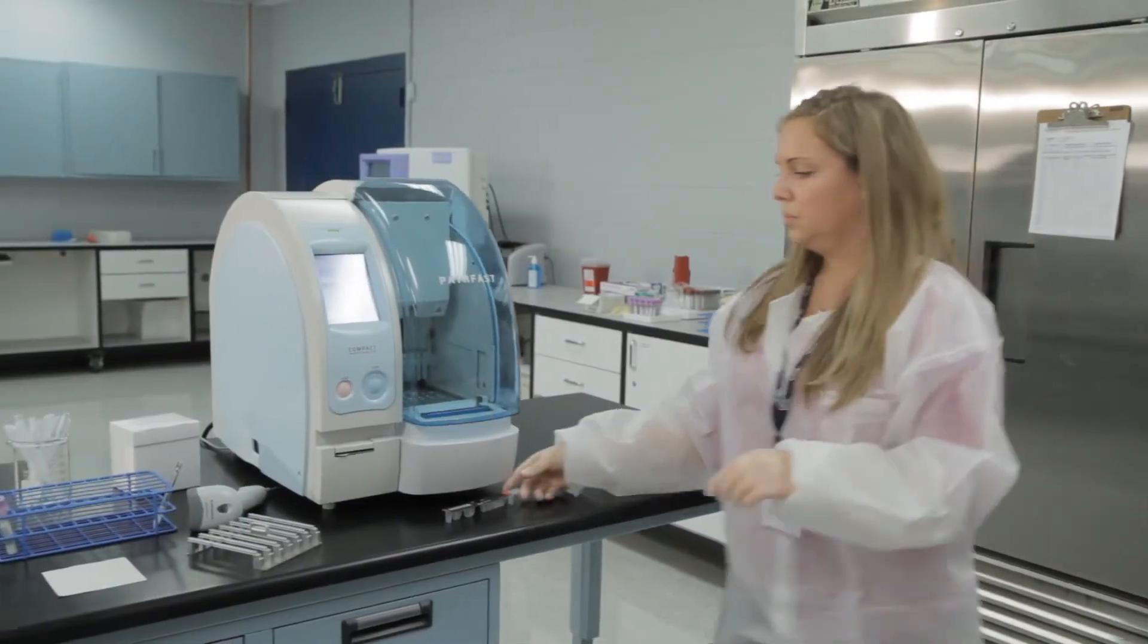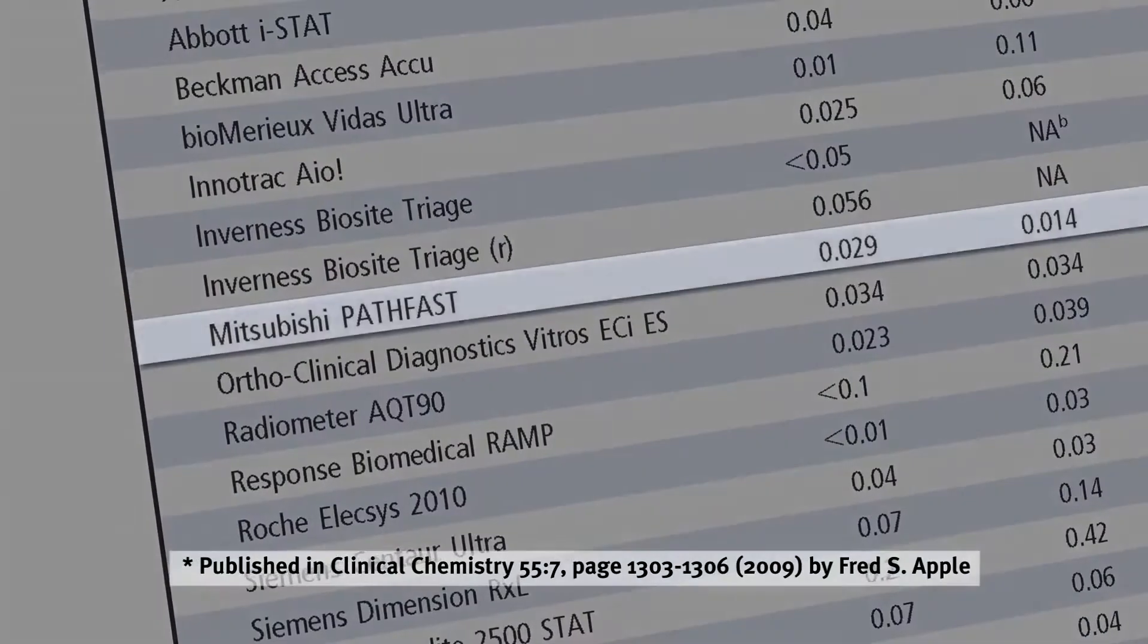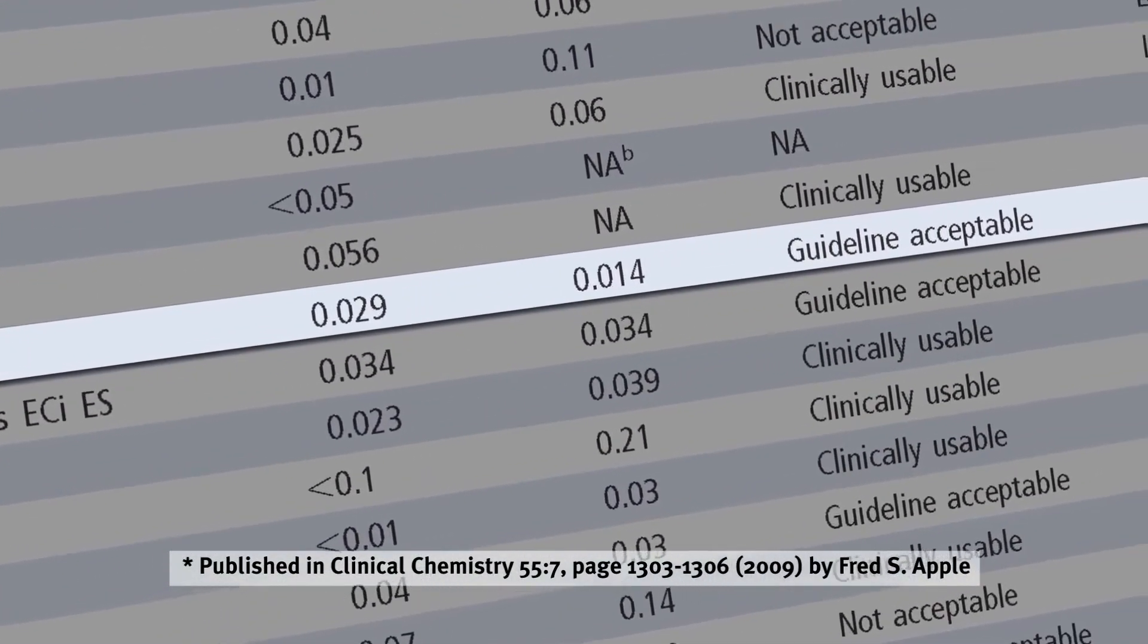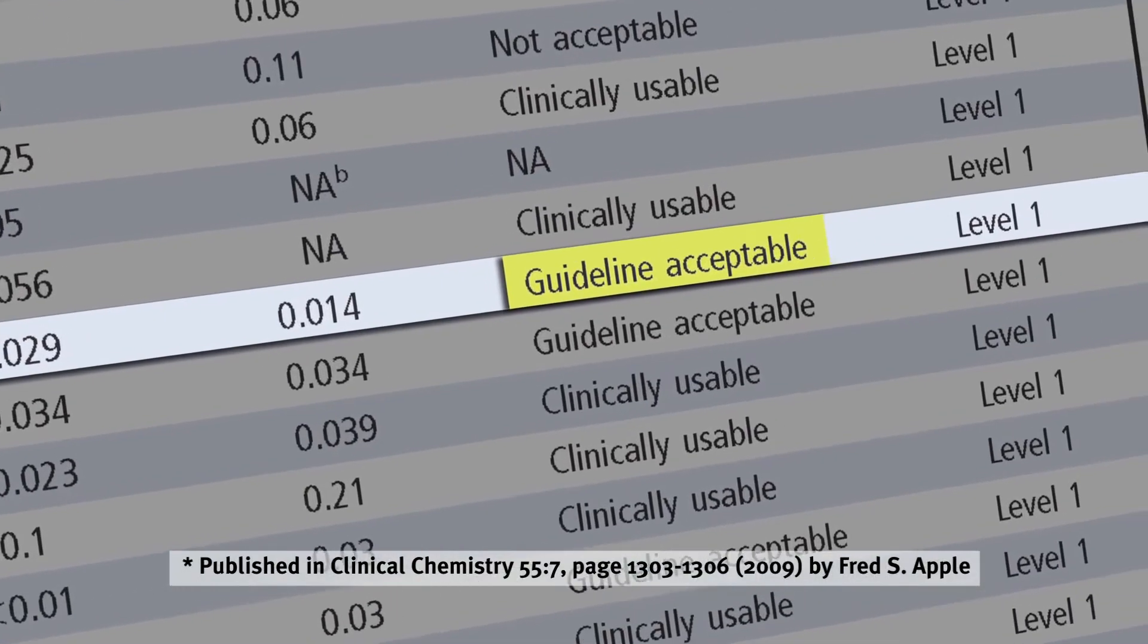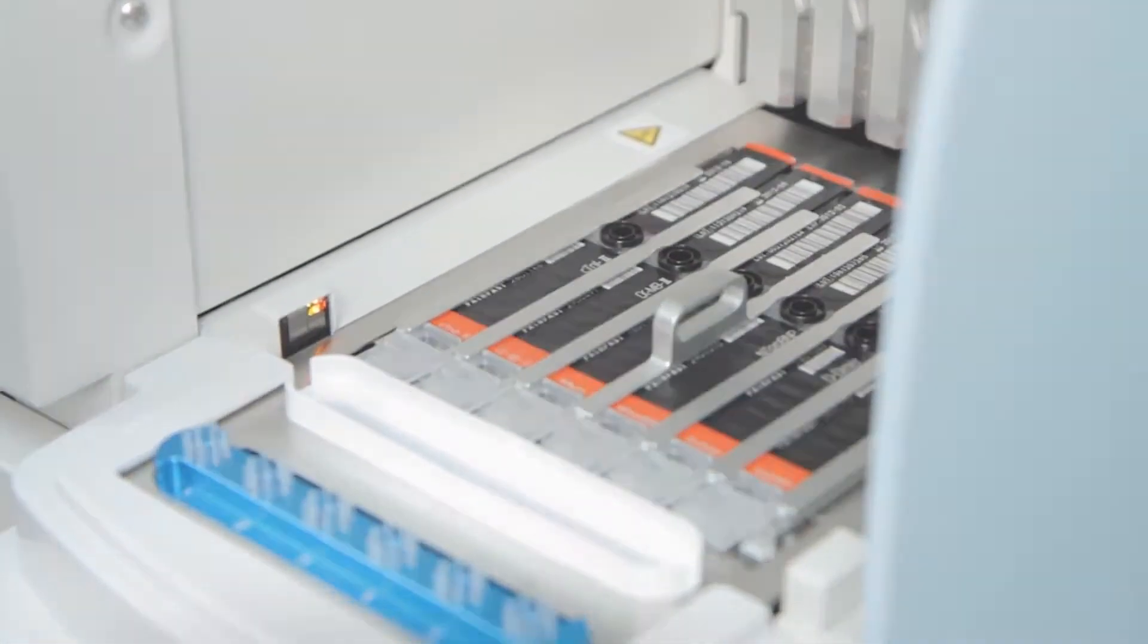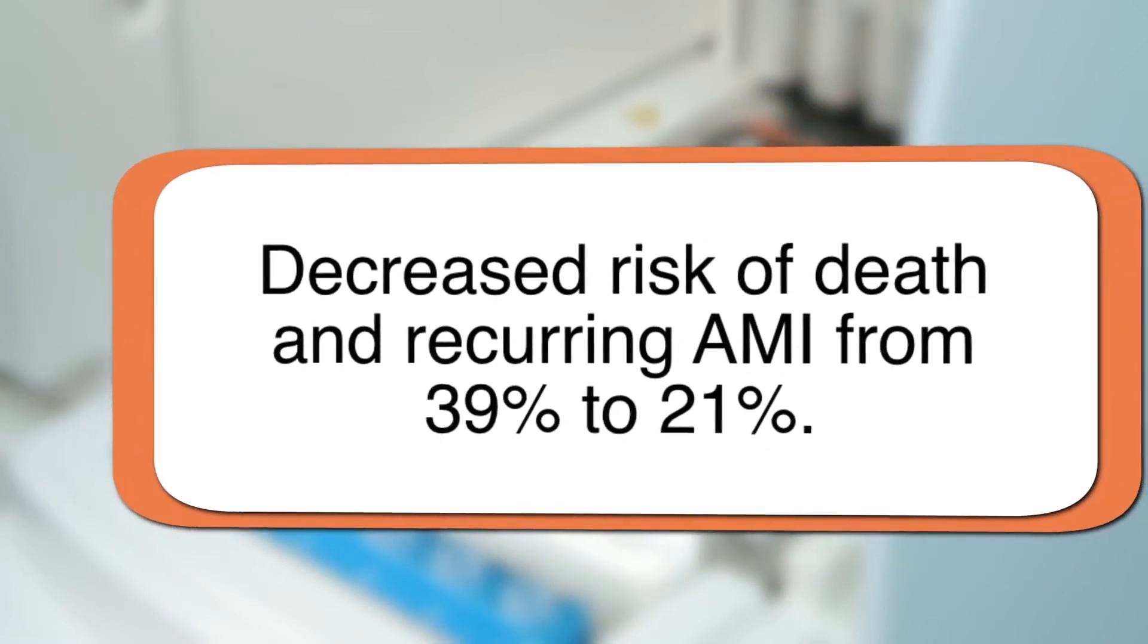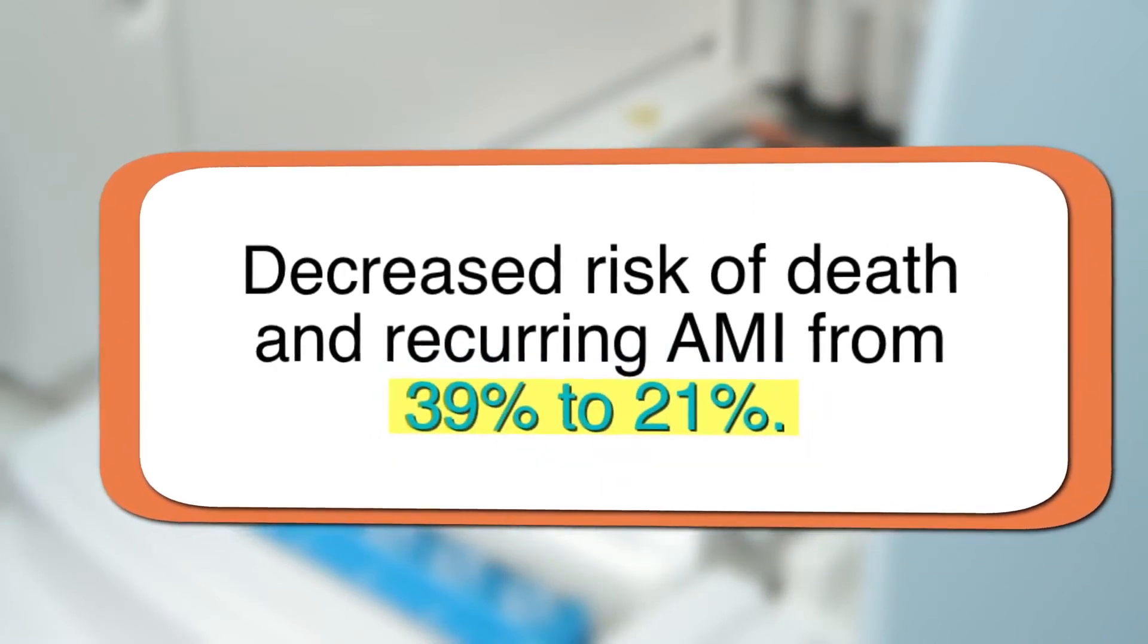The PathFast cardiac troponin I is the first and only assay cleared by the FDA on the basis of this 99th percentile value and is also guideline acceptable. Studies indicate that the use of a cardiac troponin I assay with greater sensitivity was associated with a lower risk of death and recurring AMI from 39 percent to 21 percent.